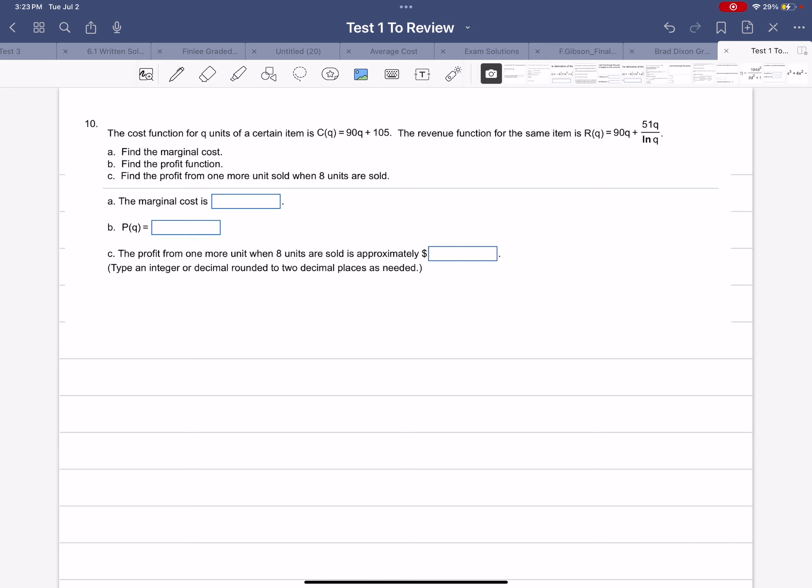Part A: find the marginal cost. Part B: the profit function. Part C: the profit from one more unit when eight units are sold.